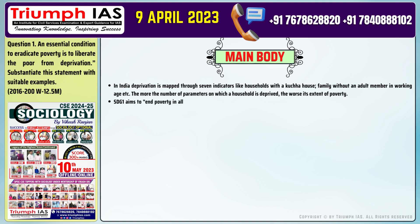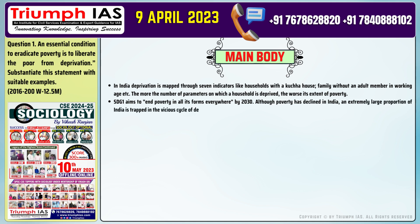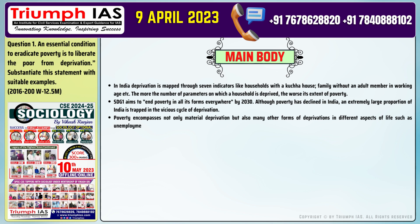Number two: SDG 1 aims to end poverty in all its forms everywhere by 2030. Although poverty has declined in India, an extremely large proportion of India is trapped in the vicious cycle of deprivation. Number three: Poverty encompasses not only material deprivation but also many other forms of deprivation — unemployment, ill health, lack of education, vulnerability, powerlessness, social exclusion, etc.